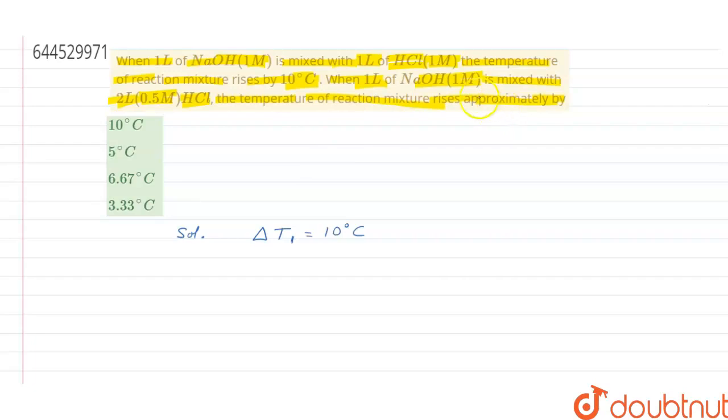Let's consider the second case when we are mixing two solutions. This time they are not equimolar and the volume is also not the same. Volume is one liter and two liters of HCl, and NaOH is one molar and HCl is 0.5 molar. We have to calculate the rise in temperature of the reaction mixture.